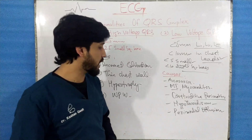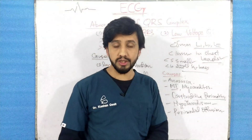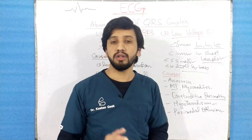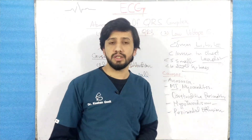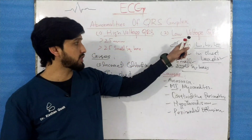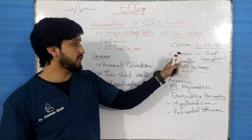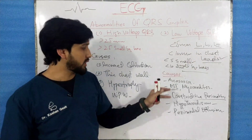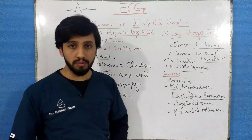There are other conditions like amyloidosis, tumor, or left-sided pneumothorax. In all these conditions you will see that the voltage of the QRS complex is less than 5 millimeters in the limb leads and less than 10 millimeters in the chest leads. These are the causes for low voltage QRS complex.